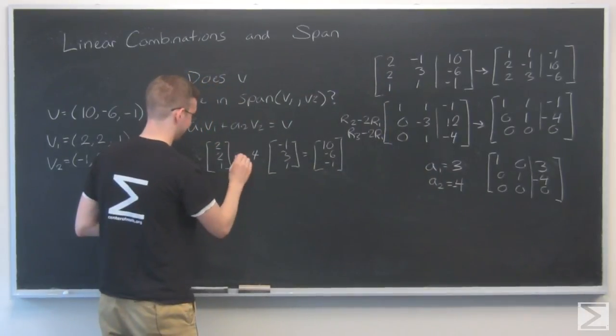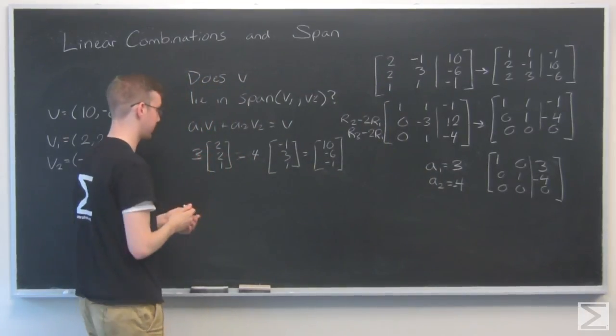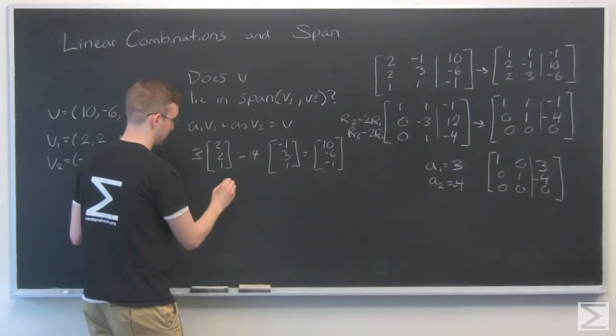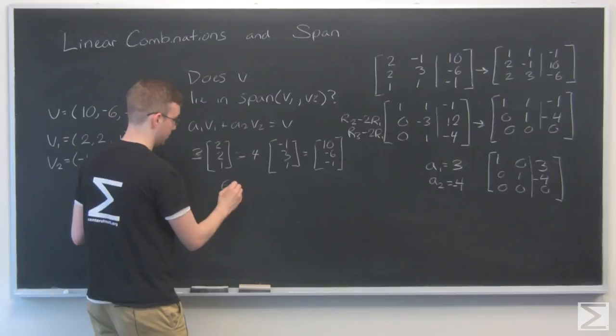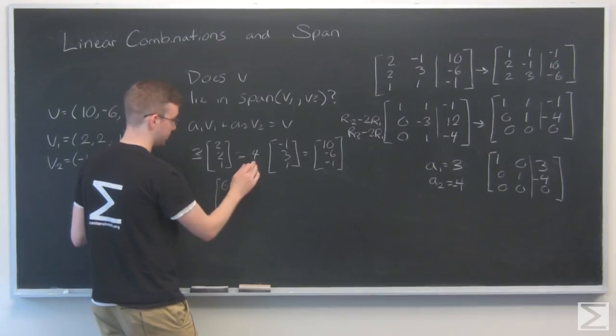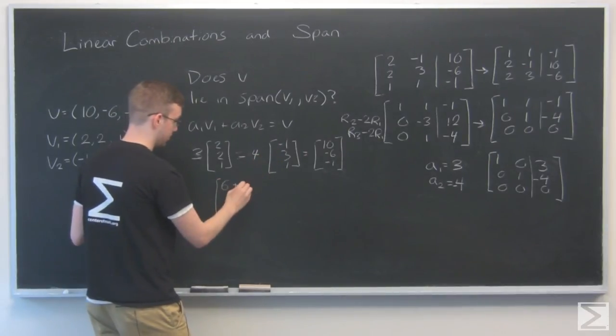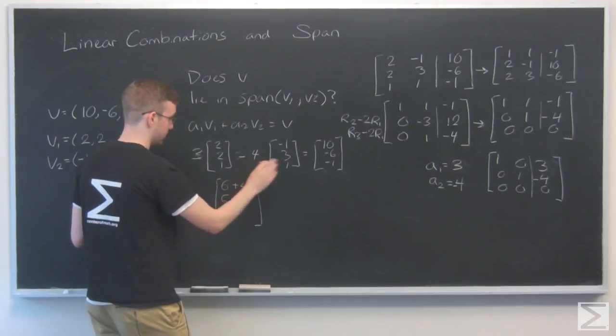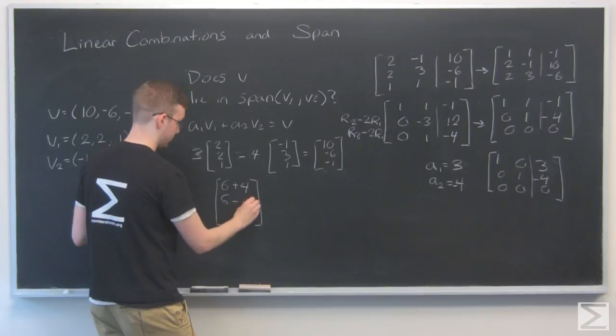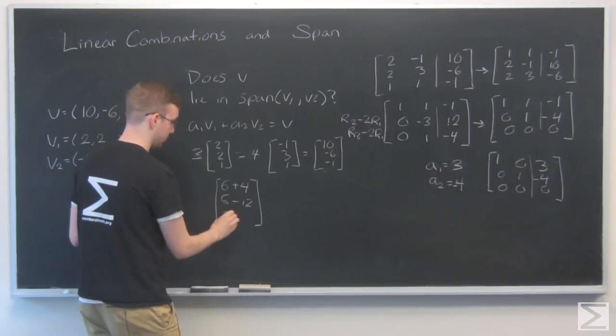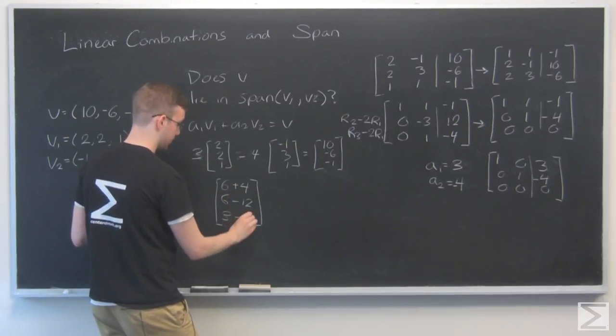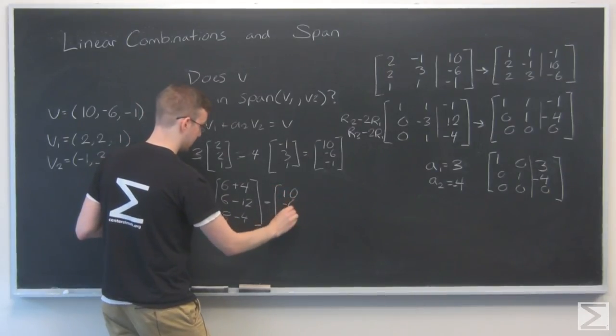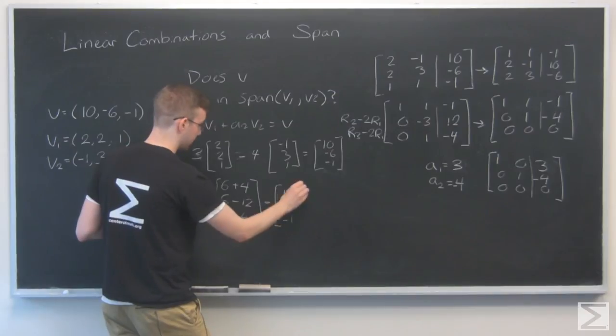So that should work out. Here I have 3 times 2 is 6. 6 minus 4 times minus 1 is positive 4. That's 6 minus 12. That's 3 minus 4. And that is indeed 10, minus 6, and minus 1.